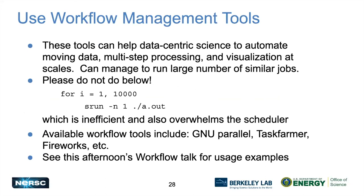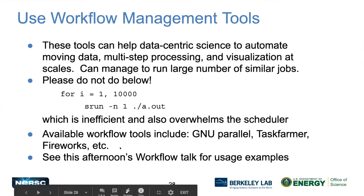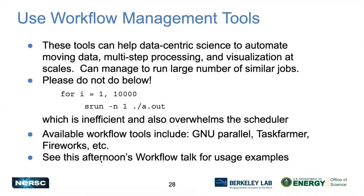Workflow management tools are recommended when you have a large number of similar jobs, need automation, data movement, or multi-step processing. For example, if you have 10,000 one-core jobs, do not use a for-loop submitting sruns continuously — this overwhelms the scheduler. Tools like GnuParallel, TaskFarmer, and Fireworks are available. There is a dedicated workflows talk this afternoon for details.